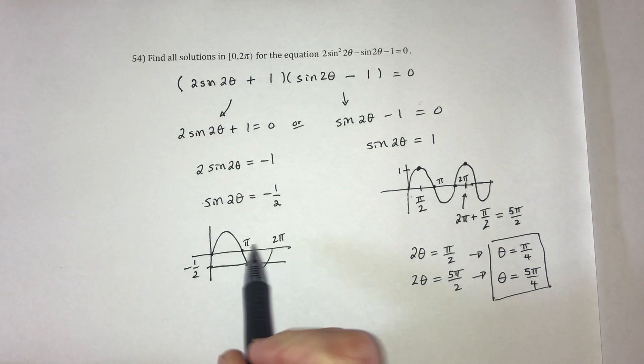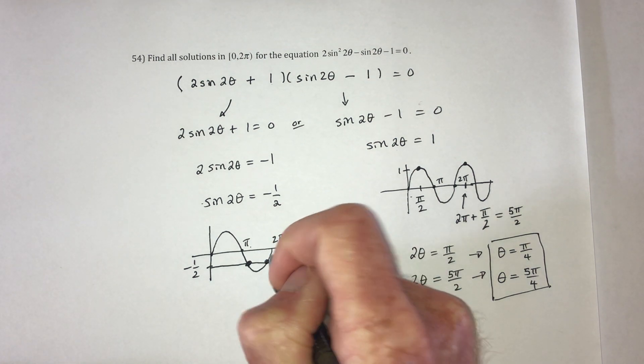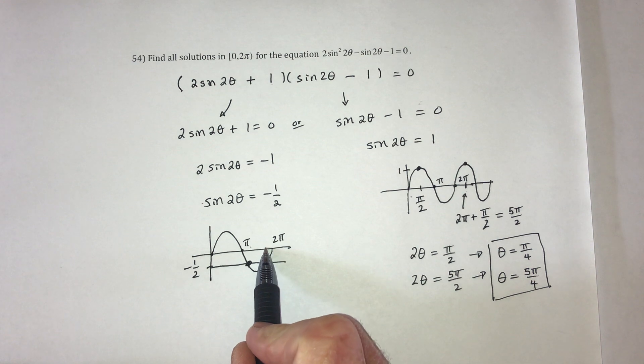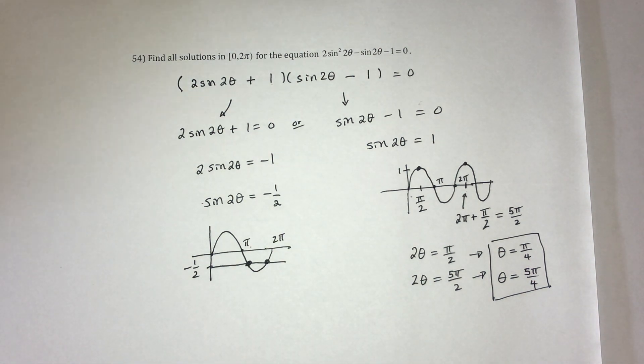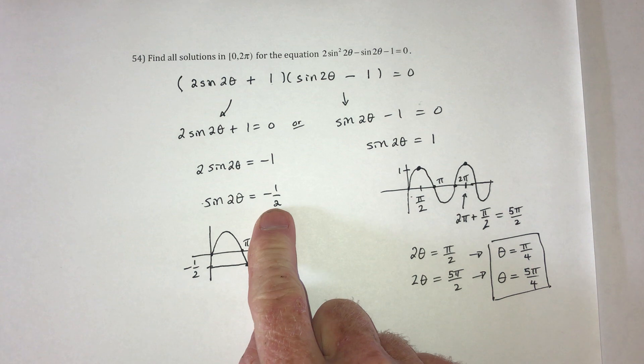One that is to the right of pi. And one that is to the left of 2 pi. Now, where is it? So the next thing is, use the calculator and find sine inverse of negative 1 half.